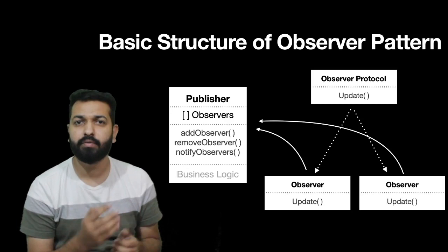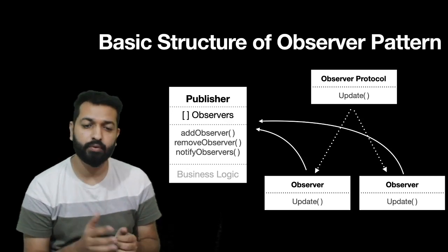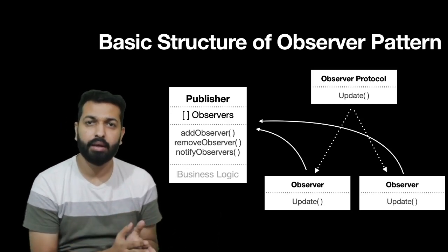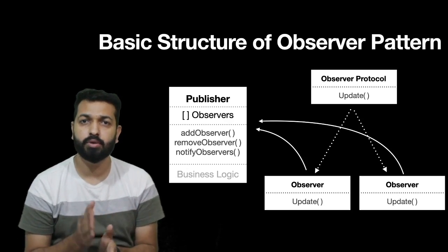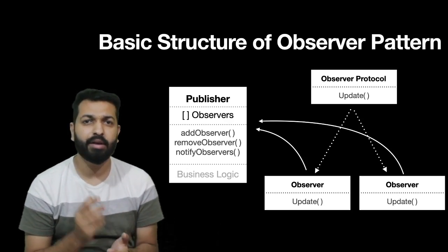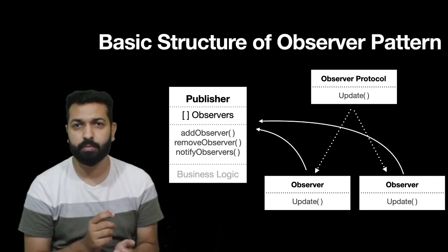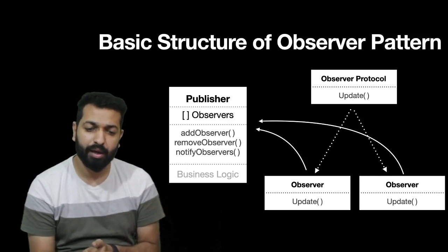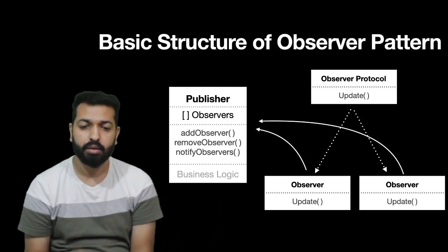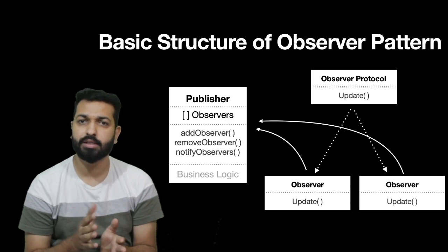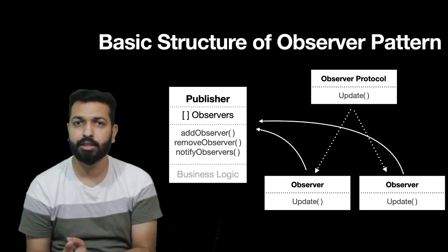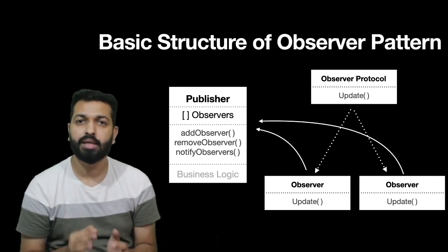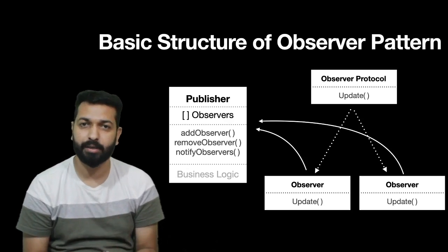Some people say there can be a fourth component — a protocol for the publisher — and there can be if you want multiple publishers following the same structure. But the minimum requirement for observer pattern is: a protocol for observers, its concrete implementations as observer objects, and then a publisher. These three entities complete the observer pattern.